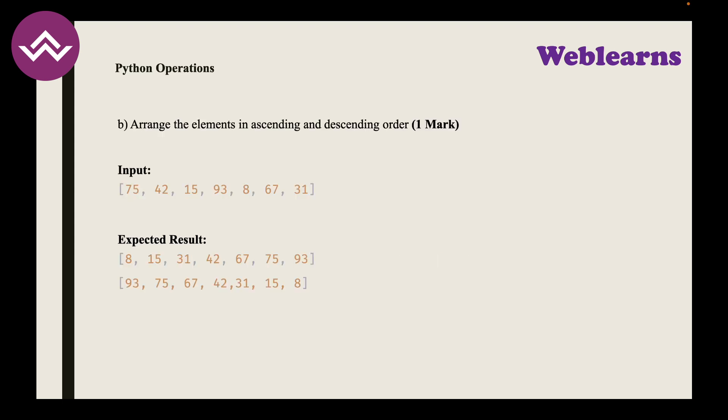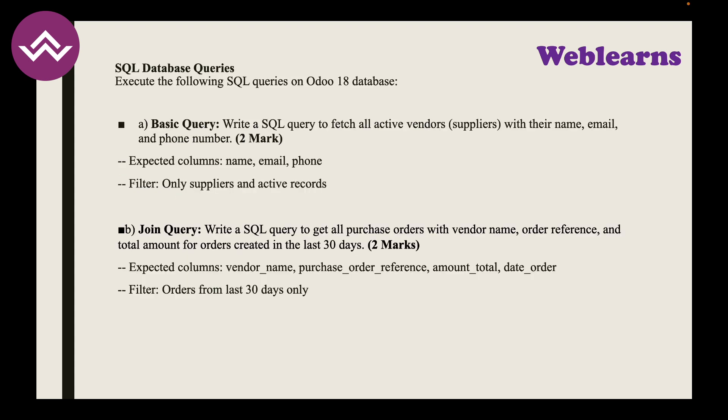Python Exercise 2: Arrange elements in ascending and descending order. The input contains a list of seven random integers. The expected result is the list sorted in ascending order and also in descending order. Once done, you achieve one mark.